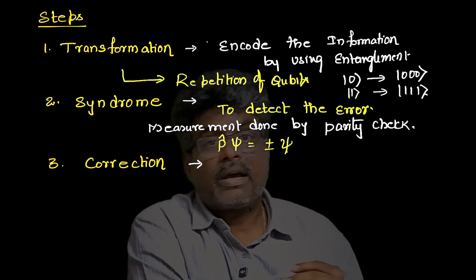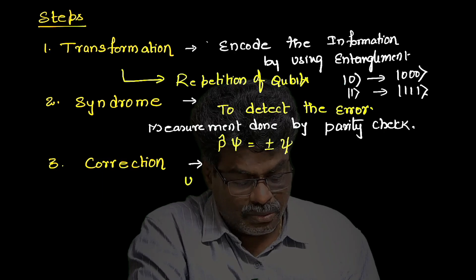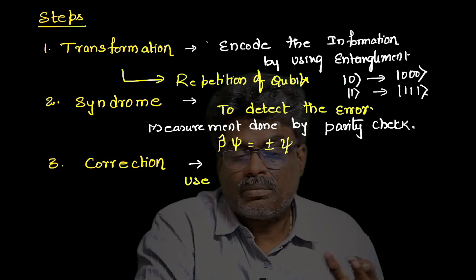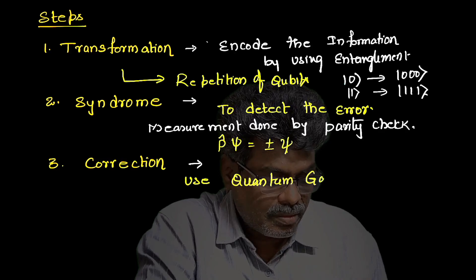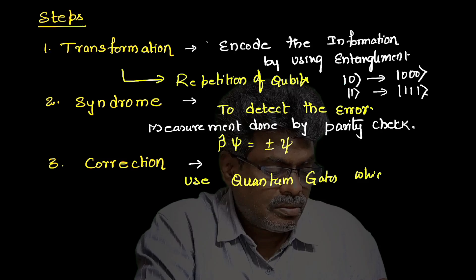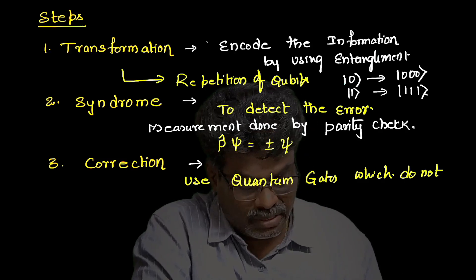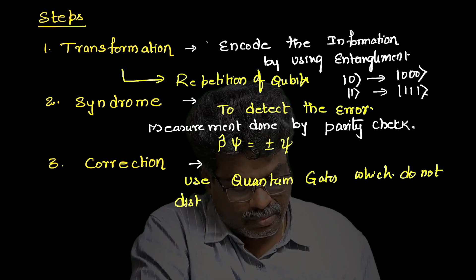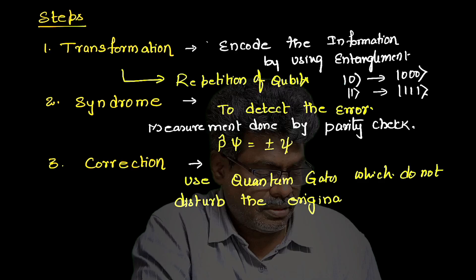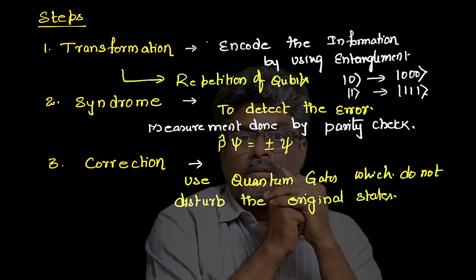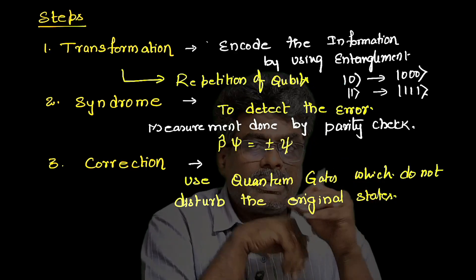The last and final step is correction. Here we will use some quantum gates which do not disturb the original state. These are the three steps to detect and correct the quantum error.